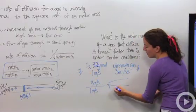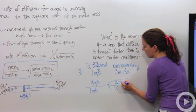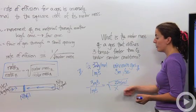And this is going to equal the square root of, and don't forget to flip them, molar mass of A, in this case we don't know, x, over the molar mass of B, in this case of 32 grams per mole.